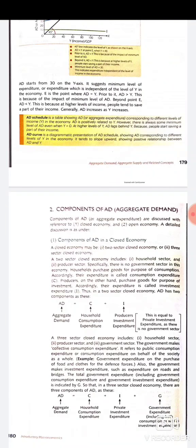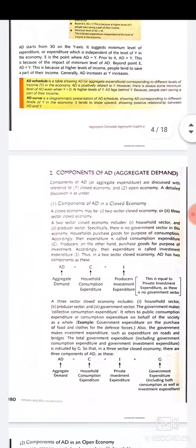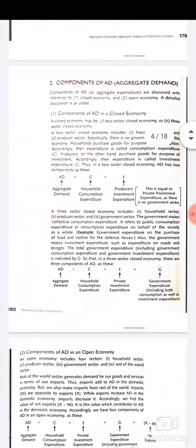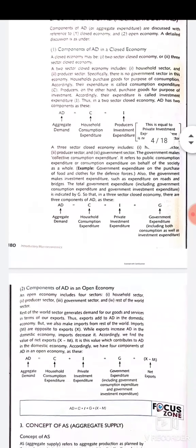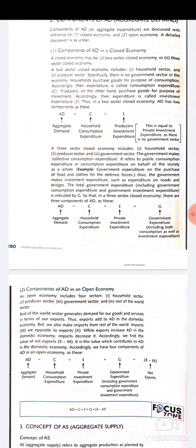Next are the components of aggregate demand, discussed with reference to closed and open economies. In a two-sector closed economy, which includes the household sector and the producer sector, households purchase goods for consumption — their expenditure is termed consumption expenditure — whereas producers purchase goods for investment, so their expenditure is termed investment expenditure. In a two-sector closed economy, aggregate demand equals consumption expenditure plus investment expenditure.